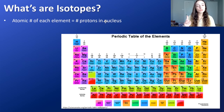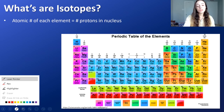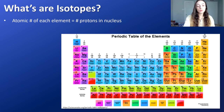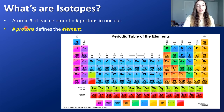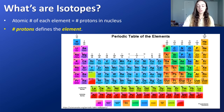First things first — what are isotopes? If we look at the periodic table, we see numbers above each element. This is the atomic number, or the number of protons in that element. The number of protons defines that element. If the number of protons changes, the element changes.